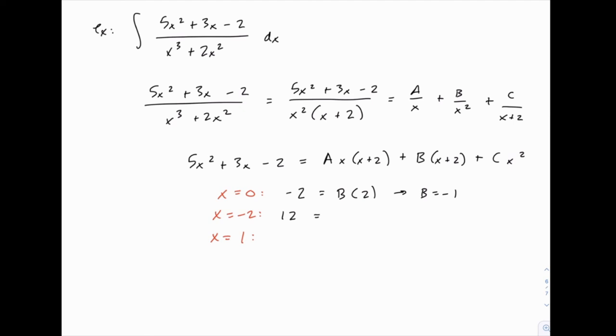Now on the right-hand side, anything with an x + 2 will disappear because that will be 0. So the first two terms will go away, and we'll just have C × (-2)², which is 4. So 12 = C × 4, which means that C = 3.